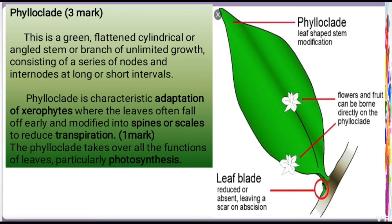What is meant by phyloclad? Phyloclad is a plant part resembling and functioning as a leaf. The stem region performs the same function as a leaf. Phyloclad means leaf-like stem. This leaf-like stem is a stem region that carries out photosynthesis, which is one of the universal processes in the world.